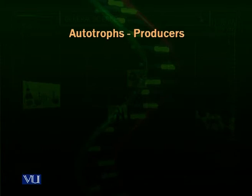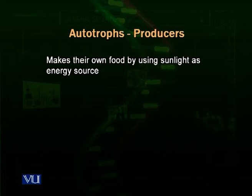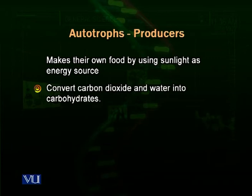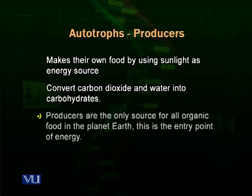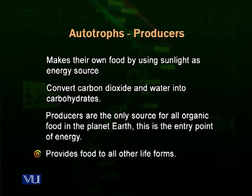Producers. We call them autotrophs — self-feeding organisms. These are the organisms which make their own food by using sunlight as the energy source. They convert carbon dioxide and water into carbohydrates. Carbon dioxide is the inorganic form of carbon. The producers are the only source of all organic food present on planet Earth. We also call them the entry point of energy in an ecosystem. They provide food to all other organisms, to all life forms.